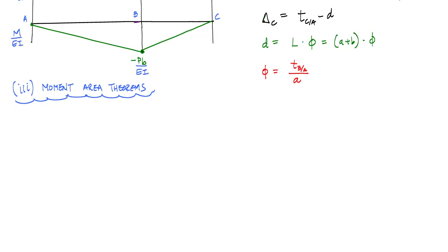So now I'm finally ready to apply the moment area theorems. And the first one I'm going to calculate is this vertical distance to point B from the tangent line at A.